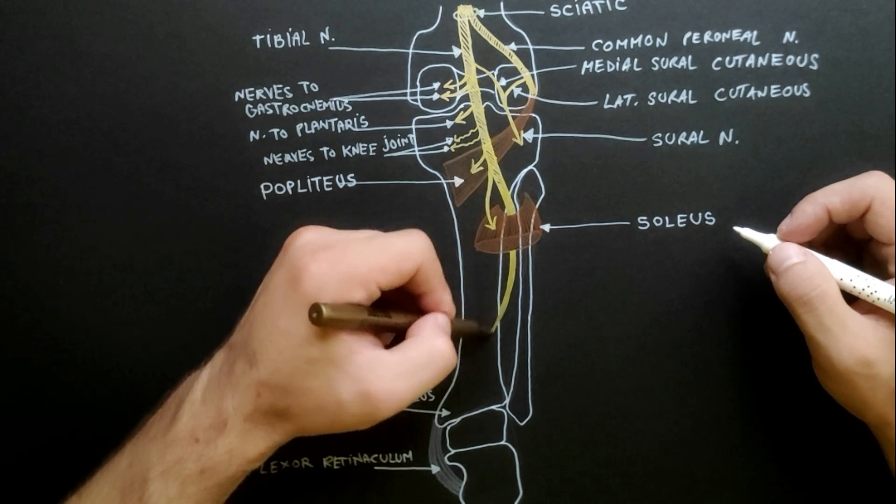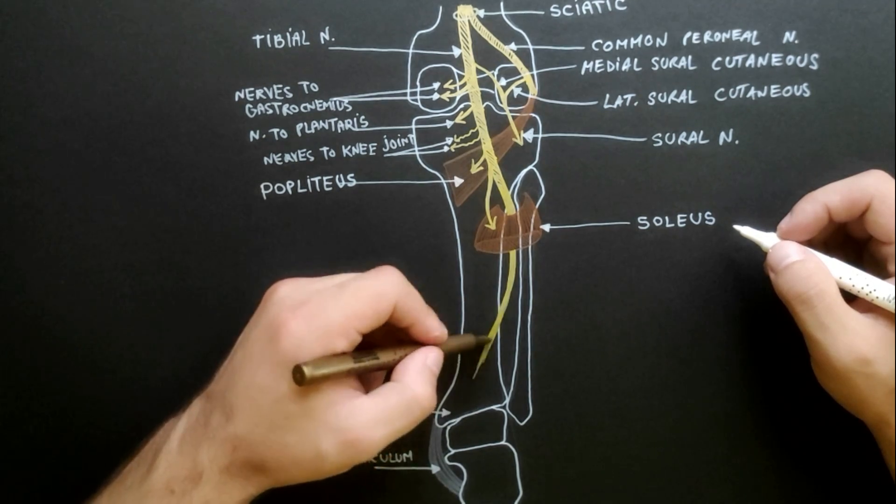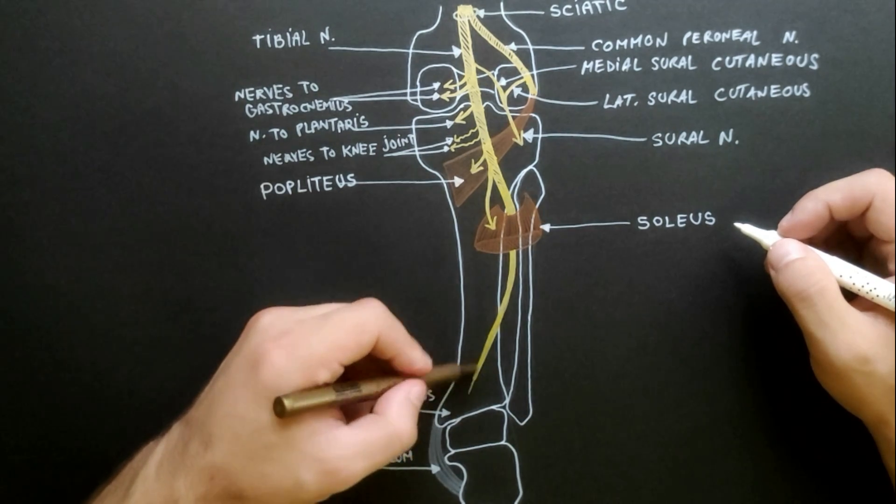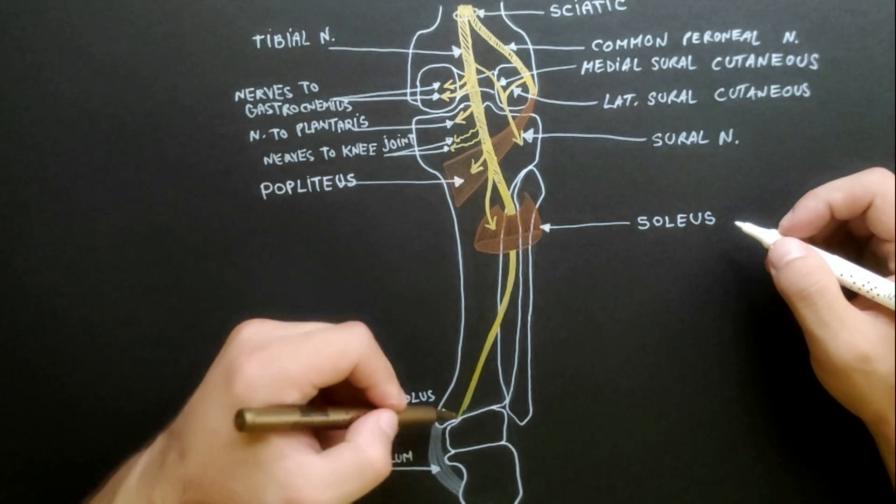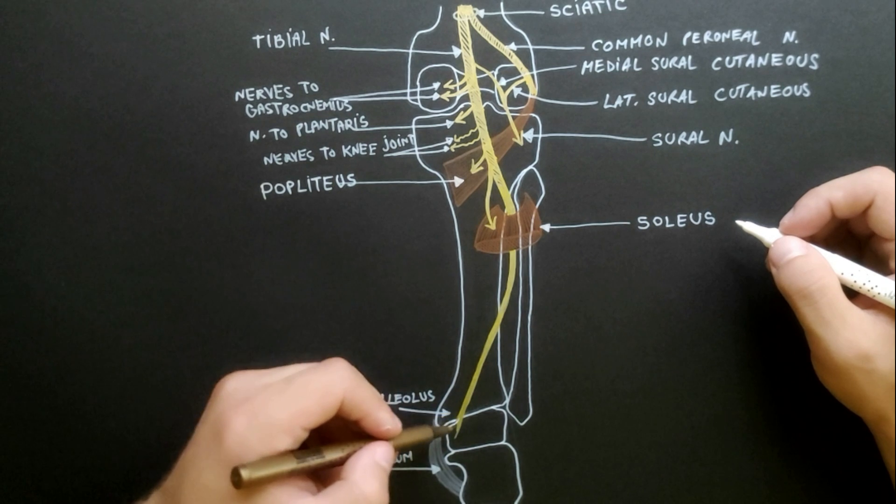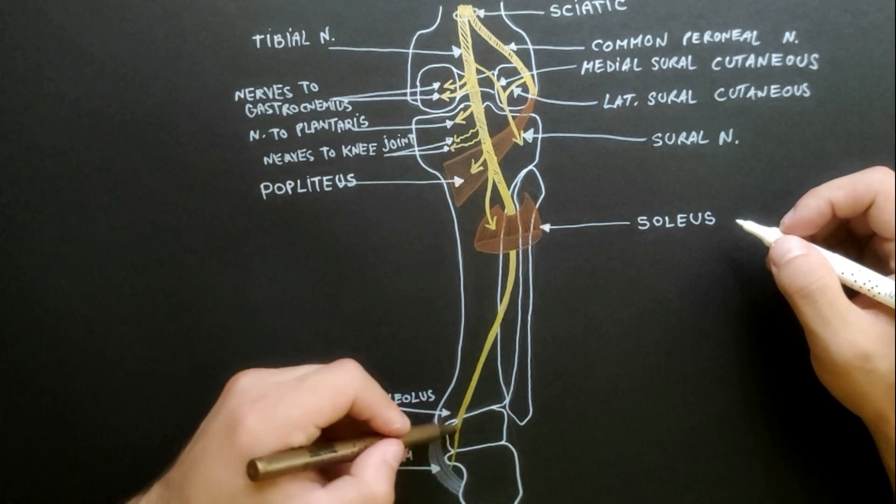In the leg, it runs downwards and medially to reach the posteromedial side of the ankle, midway between the medial malleolus and medial tubercle of the calcaneum.